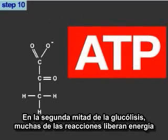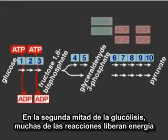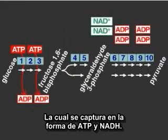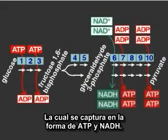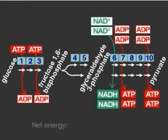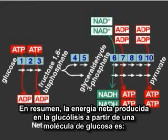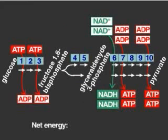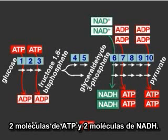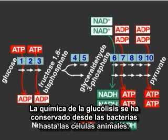In the second half of glycolysis, many of the reactions release energy, captured in the form of ATP and NADH. Overall, the net energy produced in glycolysis from a single molecule of glucose is two molecules of ATP and two molecules of NADH. The chemistry of glycolysis is conserved all the way from bacteria to animal cells.